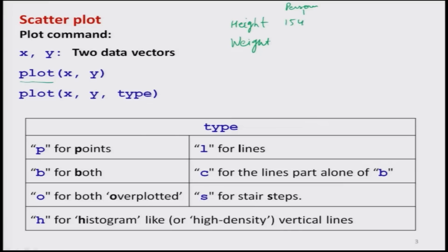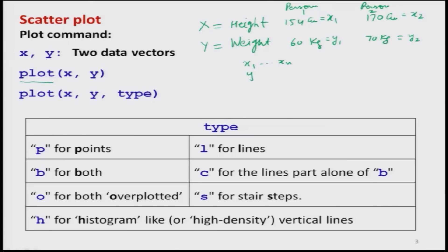For person number 2, height is 170 centimeters and weight is 70 kg. We can denote height as variable x and weight as variable y. The first observation is x1, y1, and the second is x2, y2. So we can have two data vectors x = (x1, x2, ..., xn) and y = (y1, y2, ..., yn). These two vectors x and y denote the two data vectors, and we simply use `plot(x, y)` to get a plot.